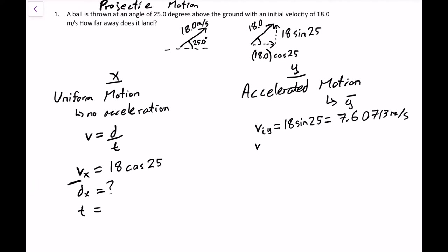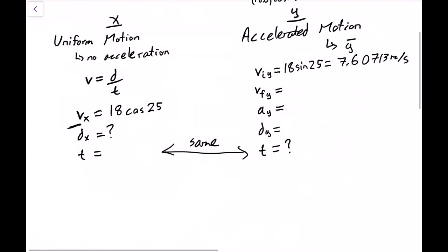The other variables that we often run into with these kinematics equations are VF in the Y direction, acceleration in the Y direction, displacement in the Y direction, and time. Now remember, time is special with these projectile motion questions because it's going to be the same in the X and Y direction. So the time at which it hits the ground in the Y direction is going to be the same as the time it hits the ground in the X direction. So what we're going to do here is starting with the Y, we're going to figure out how long does it take to hit the ground, and then we're going to move back over to the X side and figure out how far it's gone.